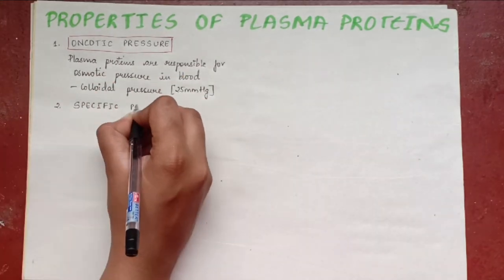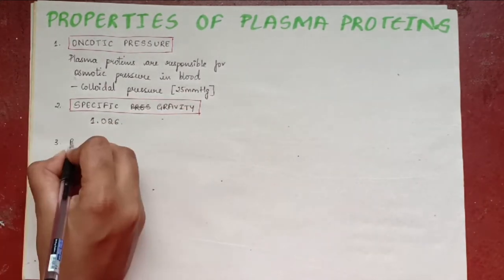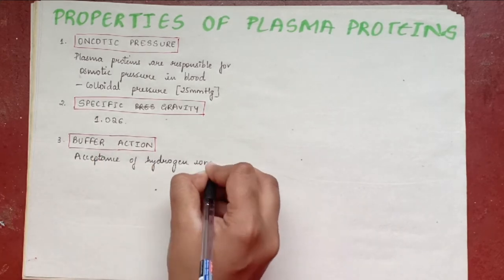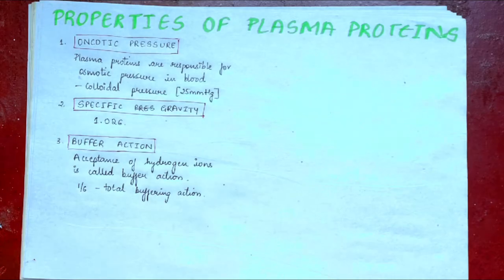Specific gravity, which is 1.026. Buffer action. The acceptance of hydrogen ion is called the buffer action, which is one-sixth of the total buffering action.